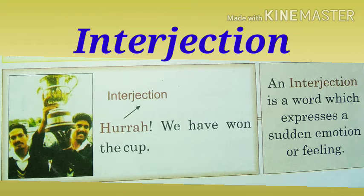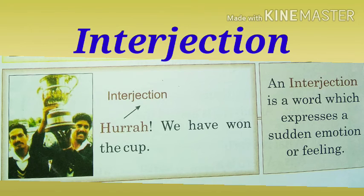Next is interjection. An interjection is a word which expresses a sudden emotion or feeling. When you are happy, when you are sad, or any other expressions — that time we use words that are called interjections. See here in the sentence: 'Hooray, we have won the cup.' The emotion or feeling here is happiness, so the word used is 'hooray.' Hooray is an interjection.